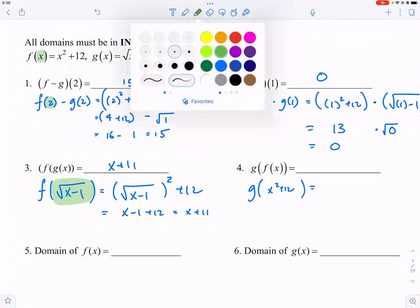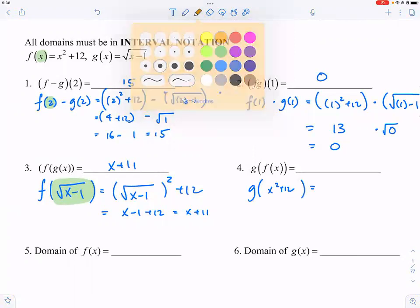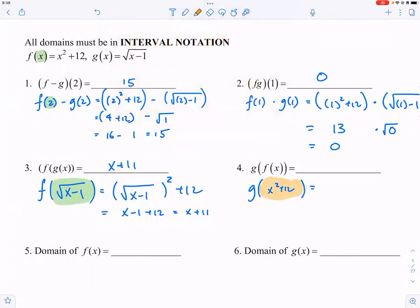And let me use a different color this time, let me use orange. So this thing right here is the same thing as G of one, the one.